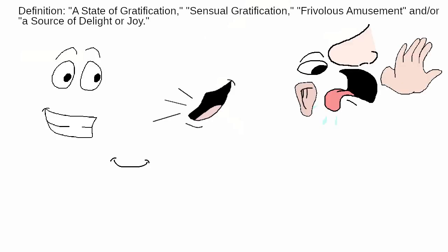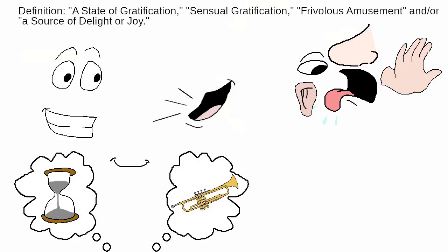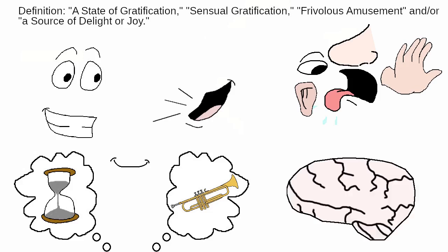In short, a pleasure is delight, amusement, or gratification, usually obtained through one of our senses, though not always. For instance, dwelling on past experiences or imagining positive experiences can be a source of pleasure, but without the senses being involved. It would be purely a form of mental gratification.